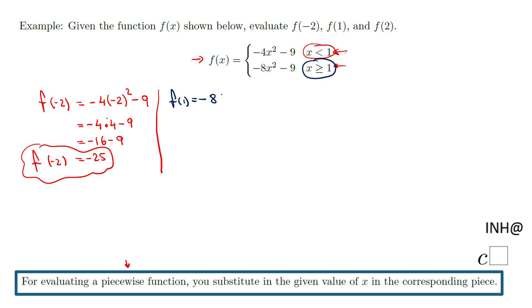So we have negative 8 times 1 squared minus 9. That will be negative 8 times 1 minus 9, and that will be negative 8 minus 9, and that will be negative 17. f of 1, the value of function f at 1 is negative 17.